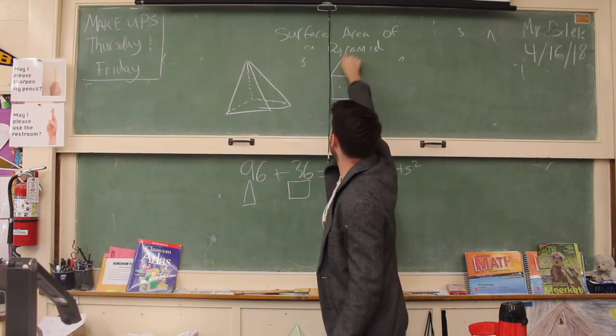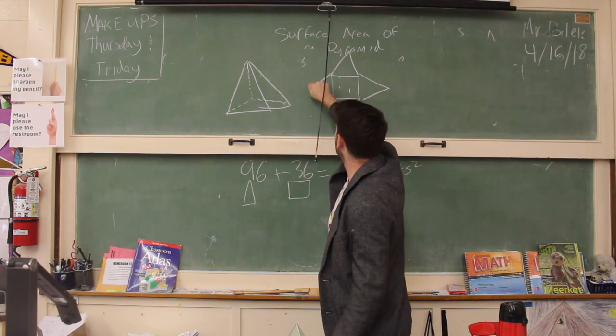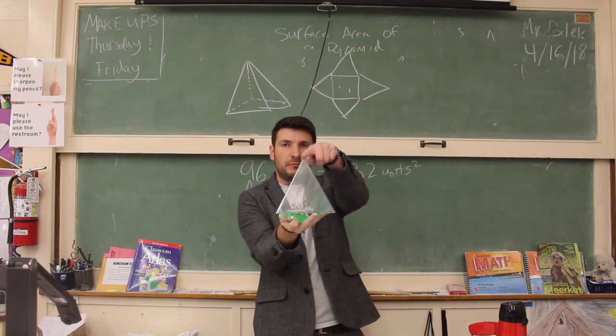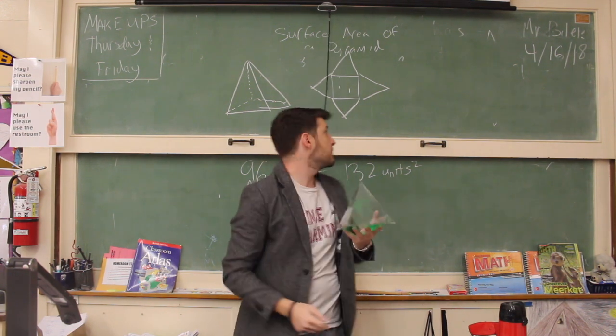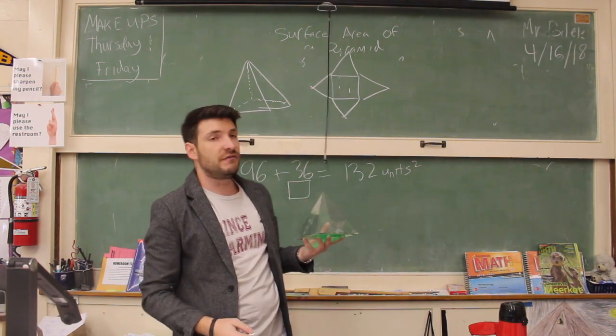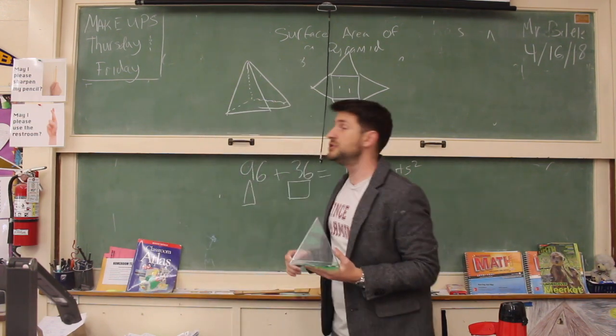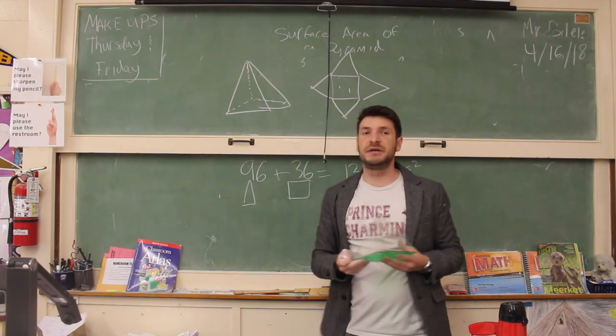This is what it would look like if our pyramid was opened up. If we took our middle, pressed it, and the whole thing just opened. This is what our pyramid looks like with all the sides opened up. Now, all four triangles should still be equal, and this should still be a square.